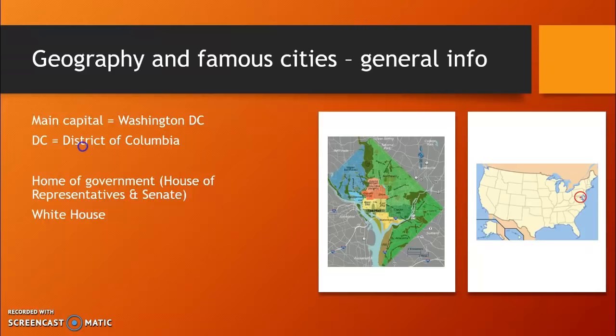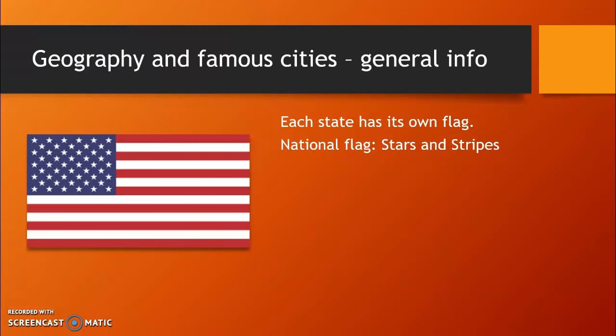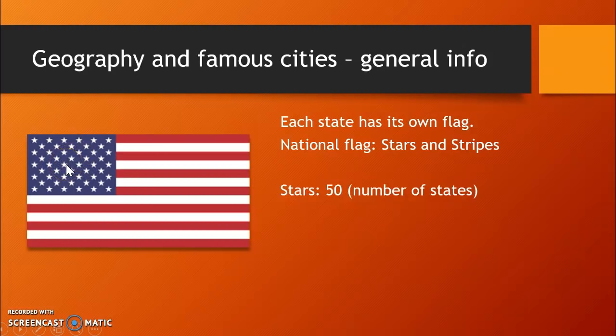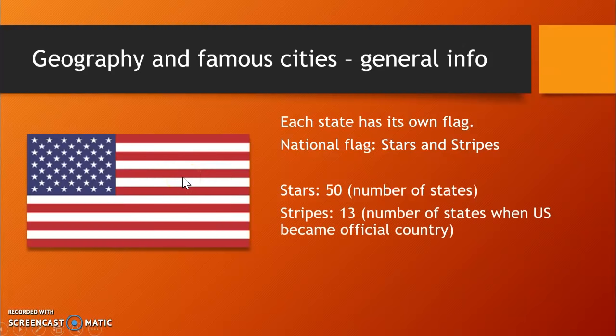Each state of the USA has its own flag, but don't worry, you don't have to learn them all. The national flag of the USA has an important meaning. If you count the stars on the flag, you will see that there are 50 — the number of states. And when you count the stripes, you will see that there are 13 — the number of states which founded the USA in 1776.